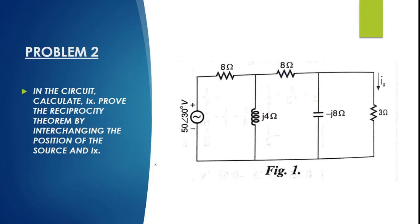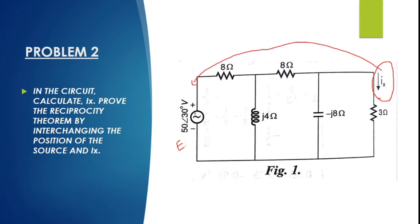Now let us start the second problem — this is an AC circuit. At the input we have a voltage source E, and this is where we measure the output. In Case 1, assign mesh currents I1, I2, I3 and solve using mesh analysis. Find the ratio of excitation to output current. Then move the input source to the other port, measure the current at the original input, and check whether the ratio is the same.